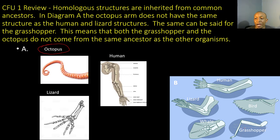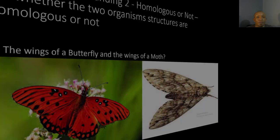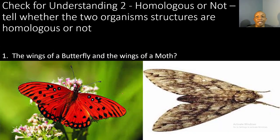Looking at the grasshopper: the human, the lizard, the whale, and the bird all have similar structures. The only one that does not have a similar structure is the grasshopper, which shows it does not share a common ancestor with the rest of the organisms. The same can be said for the octopus. Now it's time for our second check for understanding — a game called Homologous or Not.